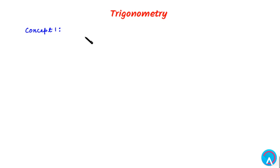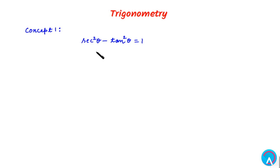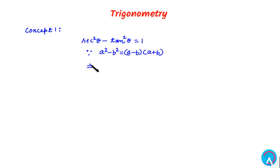In this video let's learn about some concepts of trigonometry. The first concept which we are going to learn is the identity: sec²θ - tan²θ = 1. Here we can use the identity of a² - b², and we know that a² - b² when factorized comes as a minus b multiplied with a plus b. So similarly, sec²θ - tan²θ can be written as (secθ - tanθ)(secθ + tanθ).